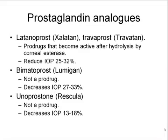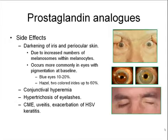Xalatan and Travatan — now it's Travatan-Z — are basically pro-drugs that become available after hydrolysis by the corneal esterases. They can reduce IOP by 25% to 30%. Lumigan is not a pro-drug; it can decrease IOP by 27% to 33%. Rescula is also not a pro-drug, and it decreases pressure 13% to 18%.